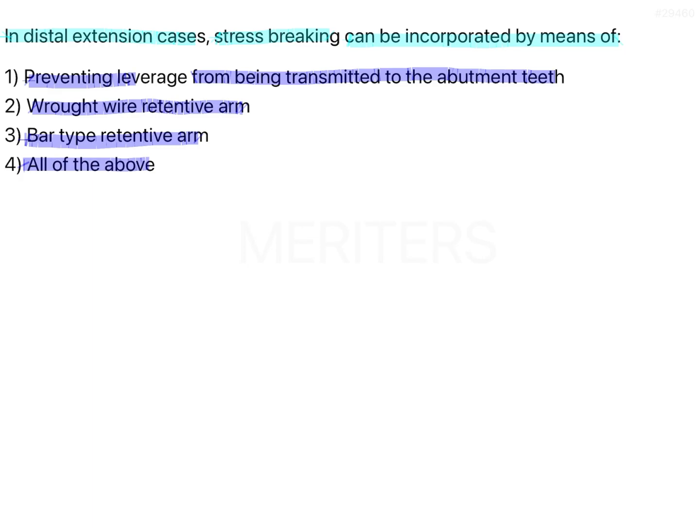Usually we tend to get lost in such questions because they are technically confusing. Let's try to break it down. Distal extension means Kennedy's class 1 and 2, meaning there is no posterior tooth present.